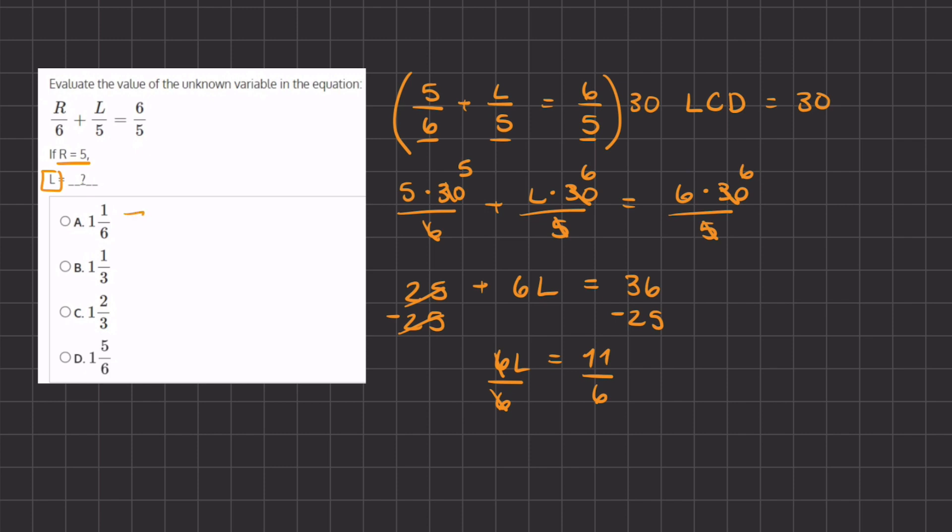And as you can tell, all of our answers are written as mixed numbers, and we have here an improper fraction. So let's turn this improper fraction into a mixed number by asking ourselves, how many times does 6 go into 11? And that is one time. When 6 goes into 11 once, we have a remainder of 5, because we have 11 minus 6 equals 5.